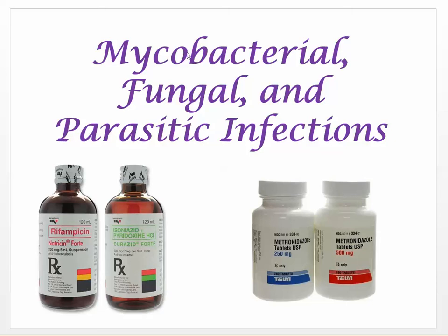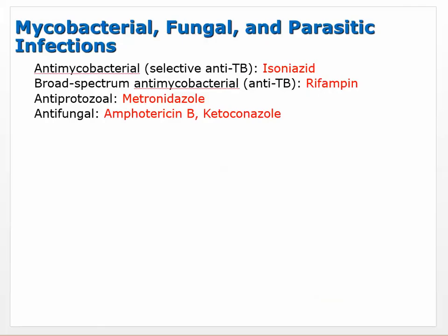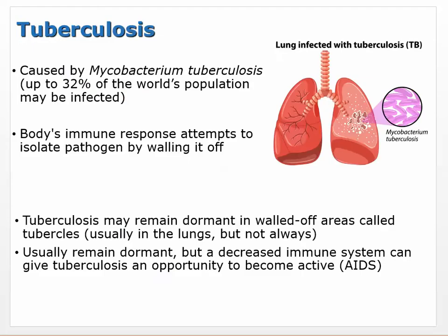Chapter 27, ATI: Mycobacterial, Fungal, and Parasitic Infections is what we're going to talk about. There are three different organisms here, so there are four drugs, but three different organisms and they all kind of work a little bit differently and have different diseases associated with them, so we need to talk about that.